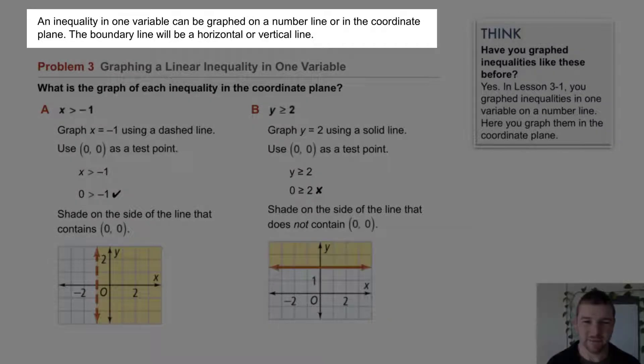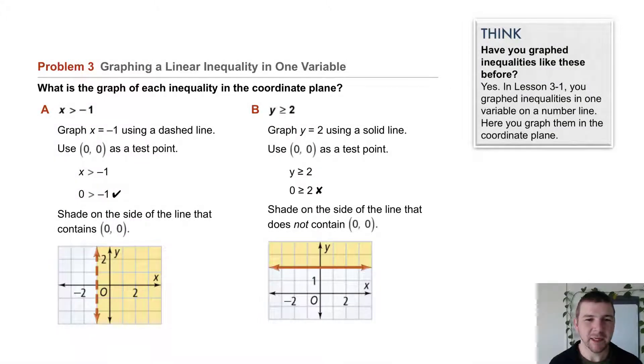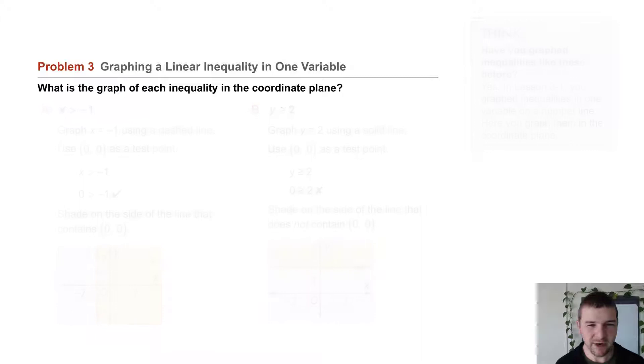An inequality in one variable can be graphed on a number line or in the coordinate plane. The boundary line will be a horizontal or vertical line. Problem 3, graphing a linear inequality in one variable. What is the graph of each inequality in the coordinate plane?